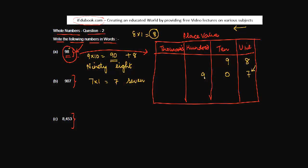At hundreds place you have nine. So you have nine hundreds. How do you write this? You write nine hundred. Do you have anything at tens place? No. What do you have at units place? Seven. And seven. Simple.